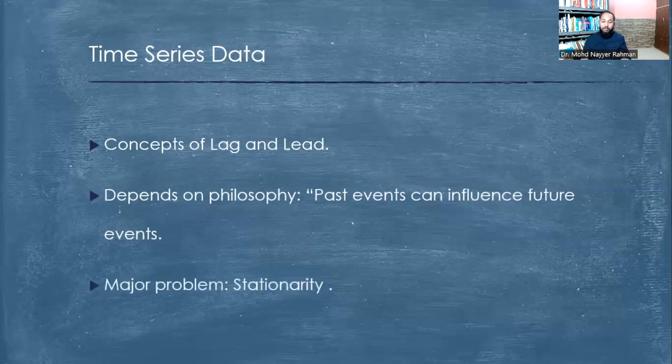The major problem in this kind of data is stationarity. We'll be discussing stationarity, but in simple terms it means the stability of the data. If data is said to be stationary in econometrics, it means it's stable and can be used for forecasting and deriving a function. If it is non-stationary, it is non-reliable in common terms.